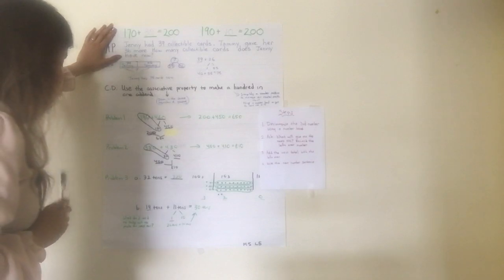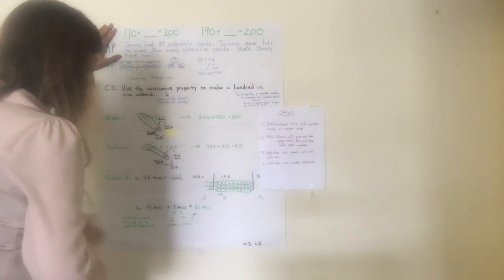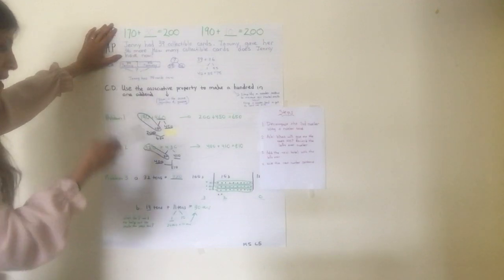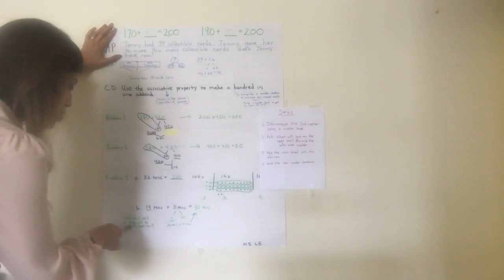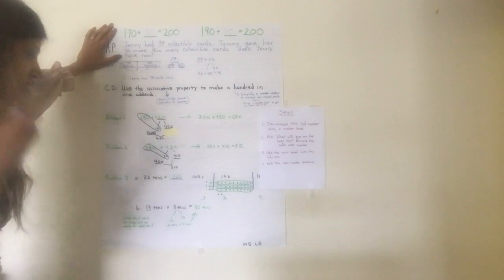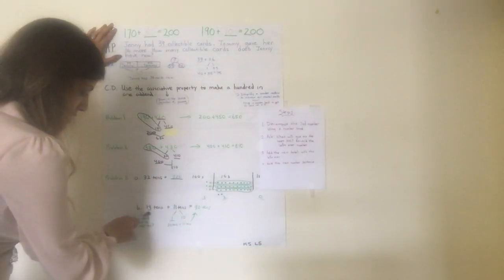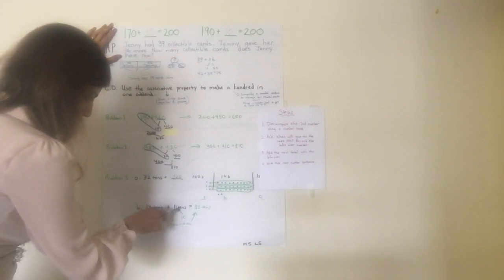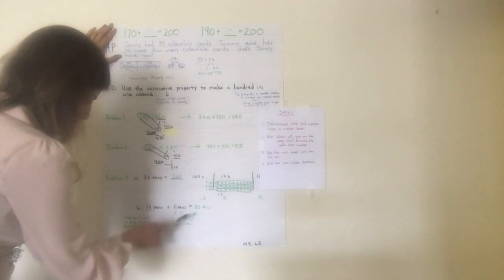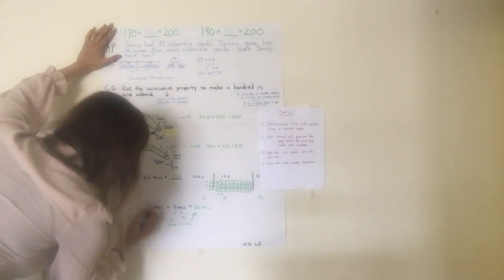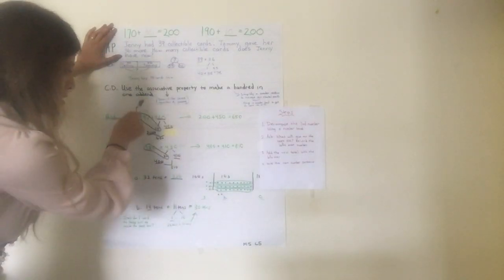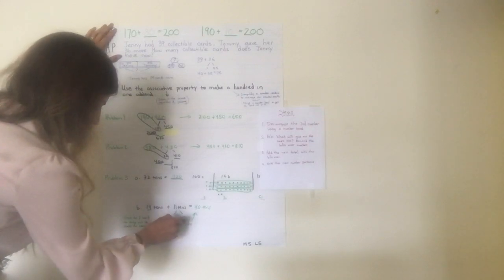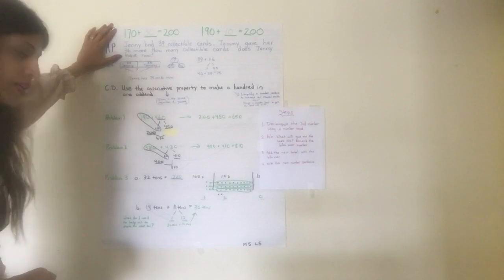Now the question is: what is 19 tens plus 11 tens? You can again use the associative property to make a hundred and one addend. Ask yourself: what do I need to take out to make the next 10 from 19 tens? I take out 1 ten from the 11 tens, leaving 10 tens. So 19 tens plus 1 ten is 20 tens, plus 10 tens equals 30 tens.